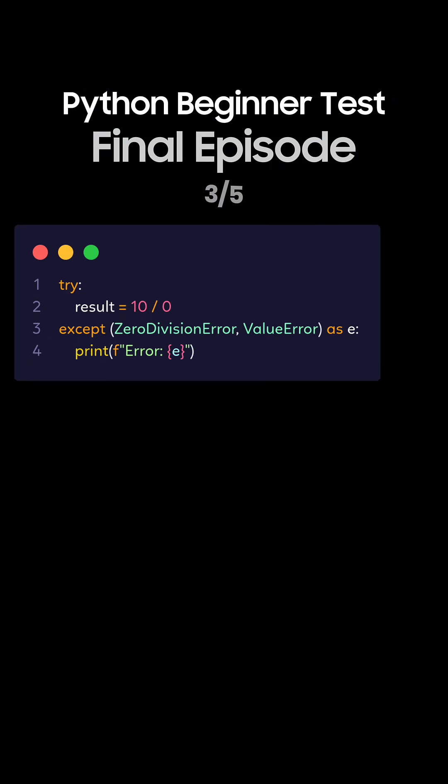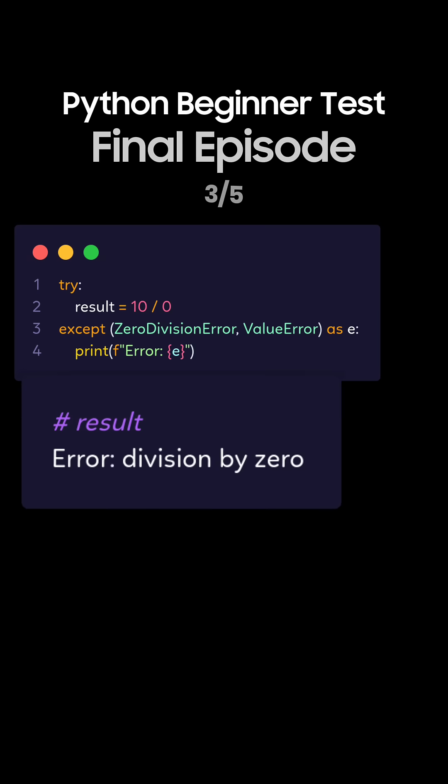Question 3: What's the output of this Python code using a tuple? This is the correct answer. The code will raise a ZeroDivisionError, and the except block will catch it, printing the error message.